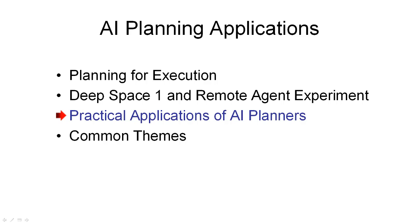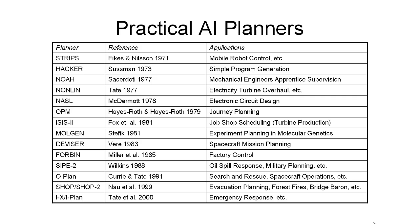We'll now look at a number of AI planners and the type of application in which they've been used. Earlier in the course we showed a table of practical planners applied in realistic situations, and noted the long history of the practical application of AI planning methods. During the course we've described some of the key techniques employed in such planners. We're going to now explore a number of these systems, the features they include, and their applications.